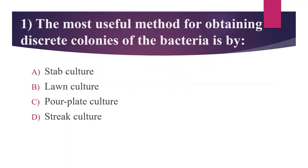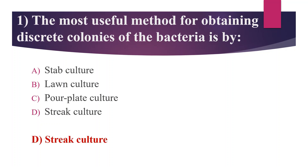First question: The most useful method for obtaining discrete colonies of bacteria is by — Option A: Stab culture, Option B: Lawn culture, Option C: Pour plate culture, Option D: Streak culture. Answer is Option D, Streak culture. In streak culture, we will get discrete colonies or isolated colonies, which is very useful for study of colony characters and morphology.